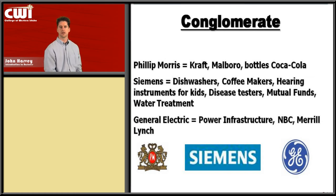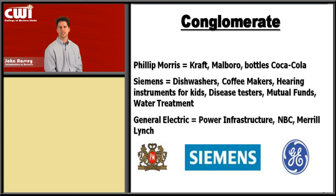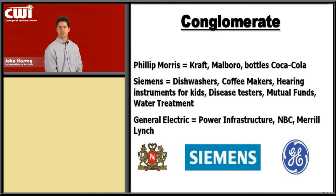Conglomerates happen because businesses may find their core focus is cyclical or seasonal. For example, as a Coca-Cola type company, you may have large sales in the summertime but low wintertime sales. So you look for another business with large sales in winter. In summertime you focus on bottling and distributing soft drinks; in wintertime you focus on making ski apparel or something like that. A conglomerate takes a whole bunch of these things and overall provides a balanced amount of revenue, income, and margin.